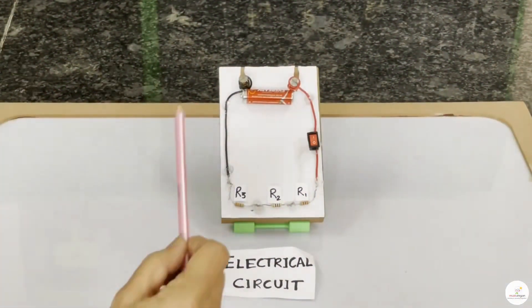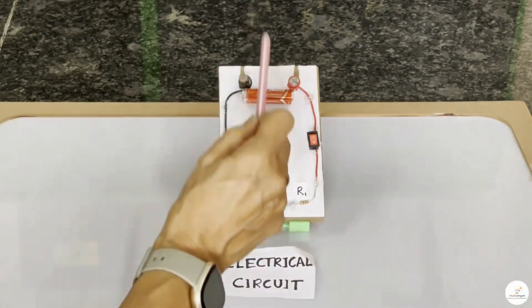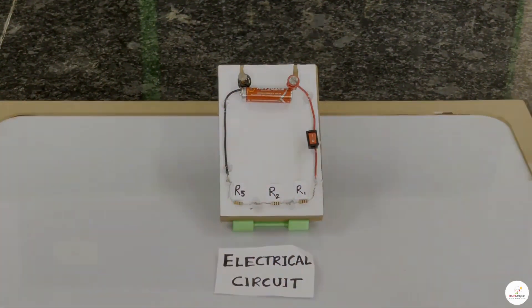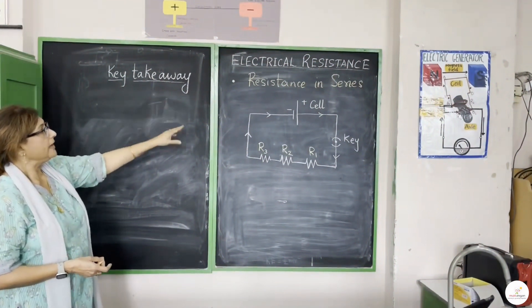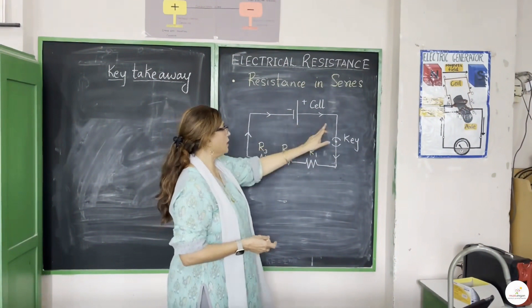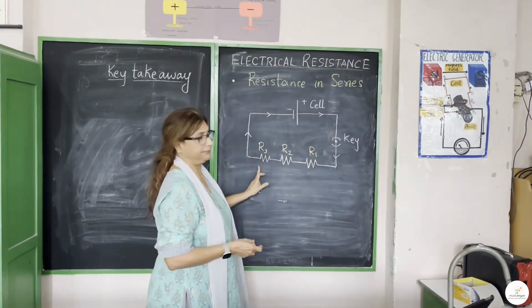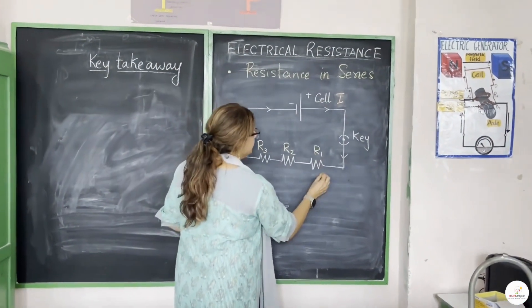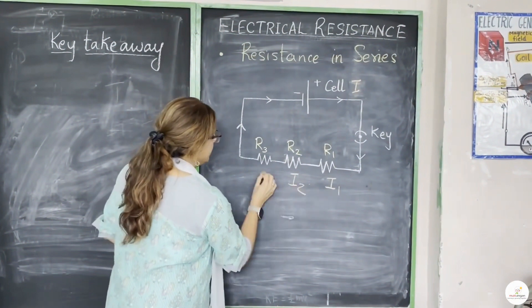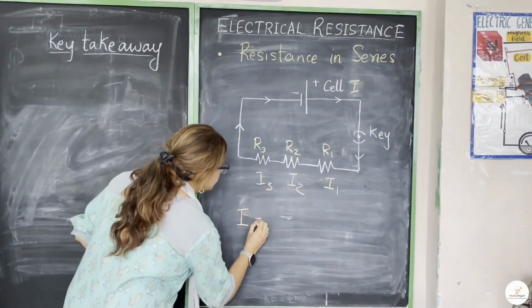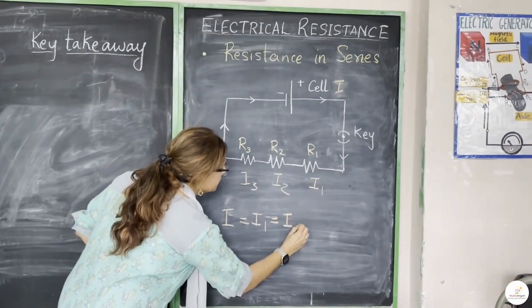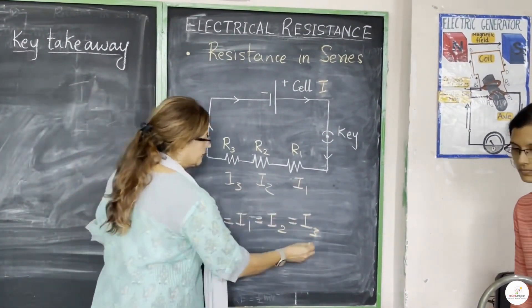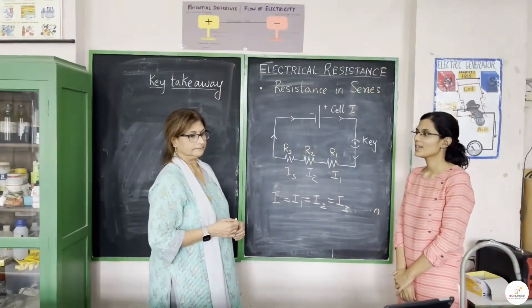10 liters of water that passes through wheel 1 will also pass through wheel 2 and then through wheel 3. Similarly, in the third model, if 10 people go up the elevator, the same 10 people will come down the staircase, the ladder and the pole. Now, let's get back to the circuit. Suppose, if 10 ampere of current flows in the circuit, the same 10 ampere will flow through resistor 1 and resistor 2 and through resistor 3. So, what's the key takeaway?